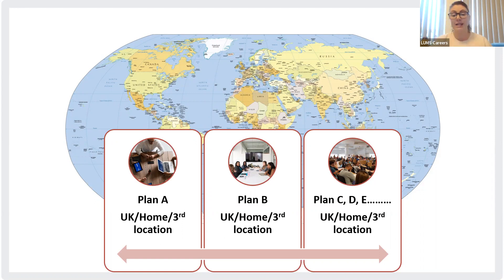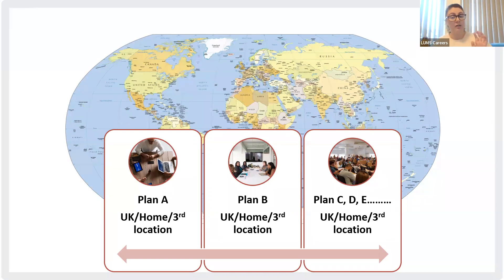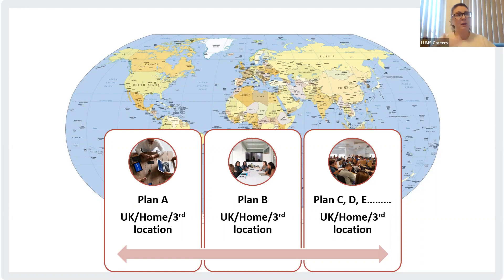Having a robust plan means accounting for internal and external factors. Internal factors include family commitments, relationships, location, or even something as simple as having a pet that limits how far from home you can work. External factors include the economy and the global political situation, which are ever-changing. If you're unsure how to develop that strategy or plan, that's what the careers service is here for.